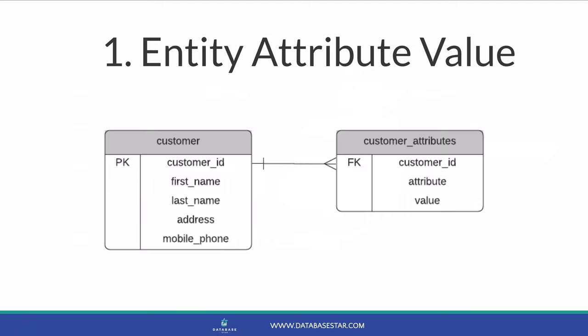The first solution is called Entity Attribute Value, or EAV. It's called this because there is a single extra table that stores three columns: the entity name, the attribute name, and the attribute's value. The entity refers to a record in another table — it could be a customer ID, which would be the field in the customer table that it relates to. The attribute would be the title of the field that you add. So if the user adds a field called 'business phone' to a particular customer, this value would go in that field. The value column holds the value of the specified attribute for that entity — so that's where the phone number would go.